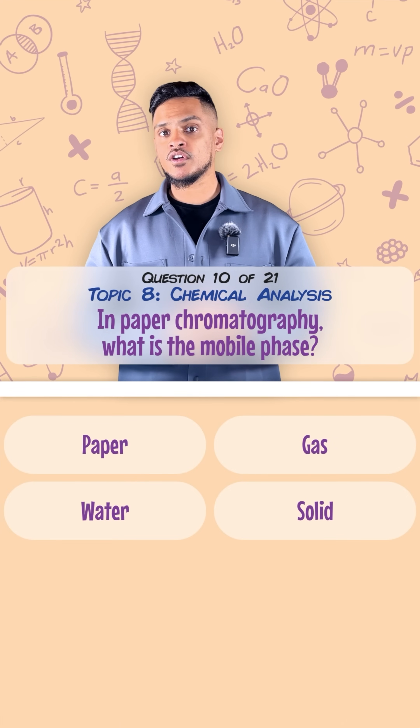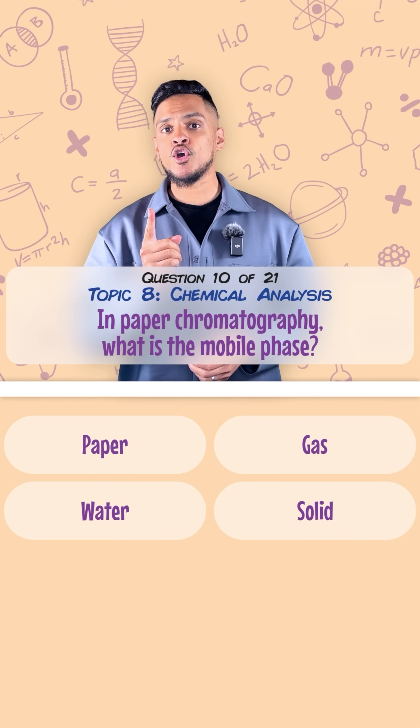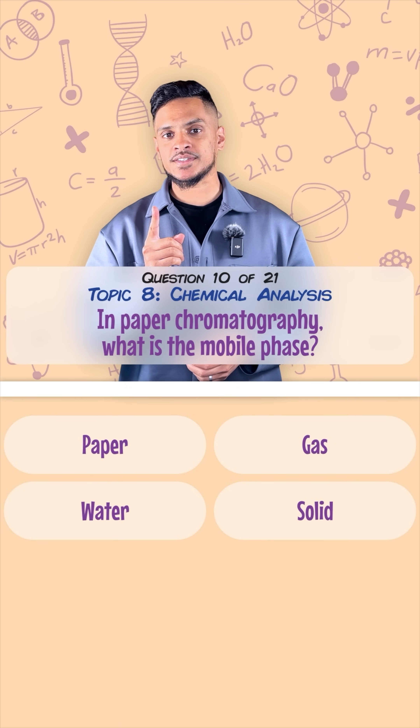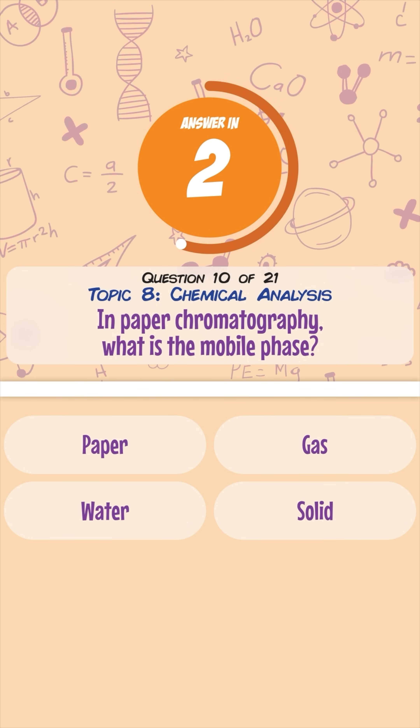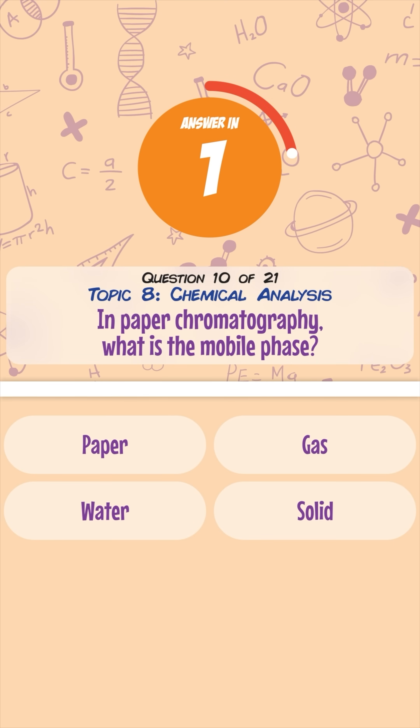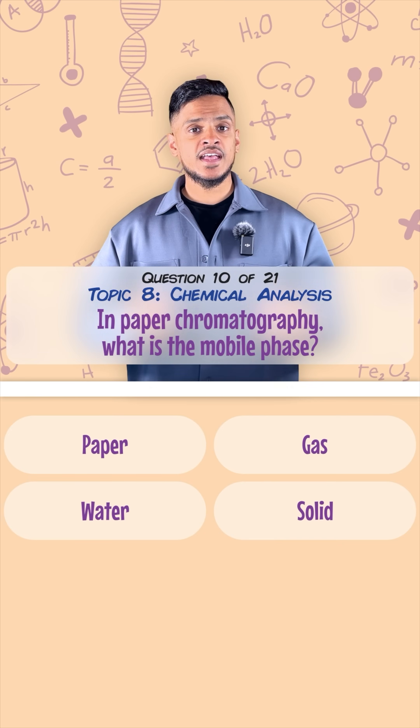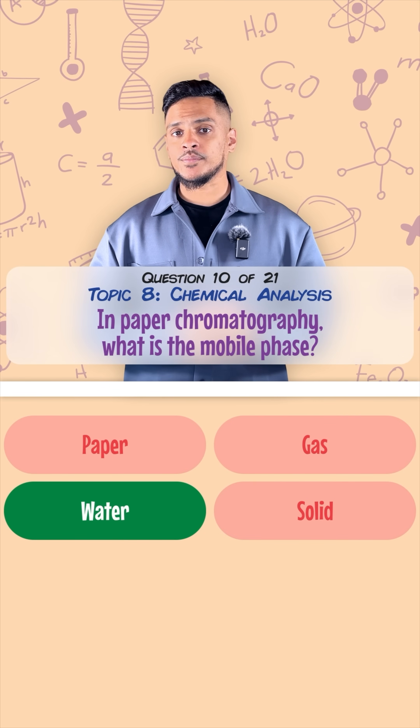In paper chromatography, what is the mobile phase? That's the water.